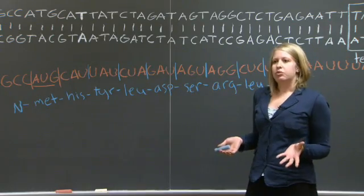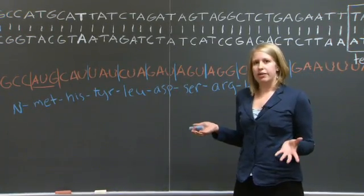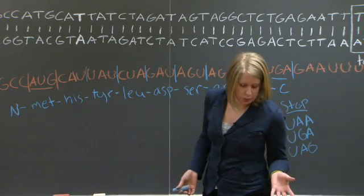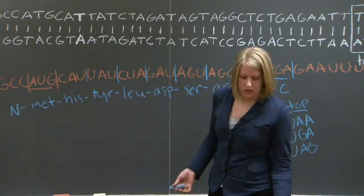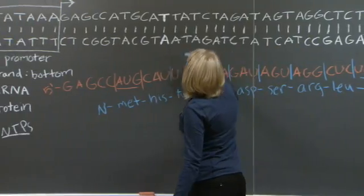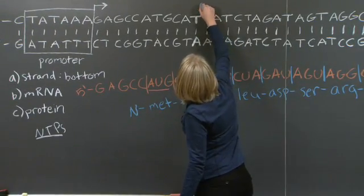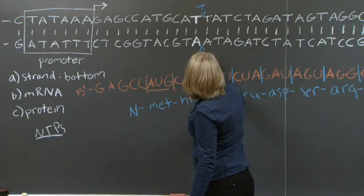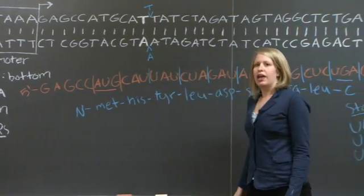Now what we want to do is we want to take into account what would happen if we had a mutation in our sequence. So in this case, in this problem, we're going to insert a base pair right here. So we're going to insert an extra T here and an extra A here. Now, if this is happening in the DNA, when our DNA is transcribed to make our RNA, what's going to happen to the RNA?